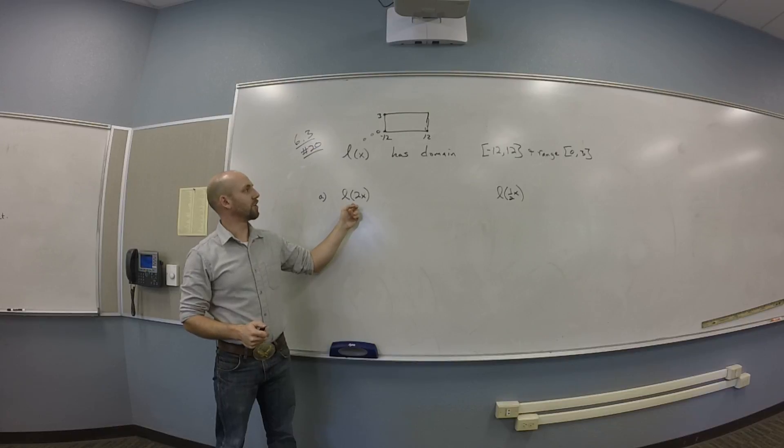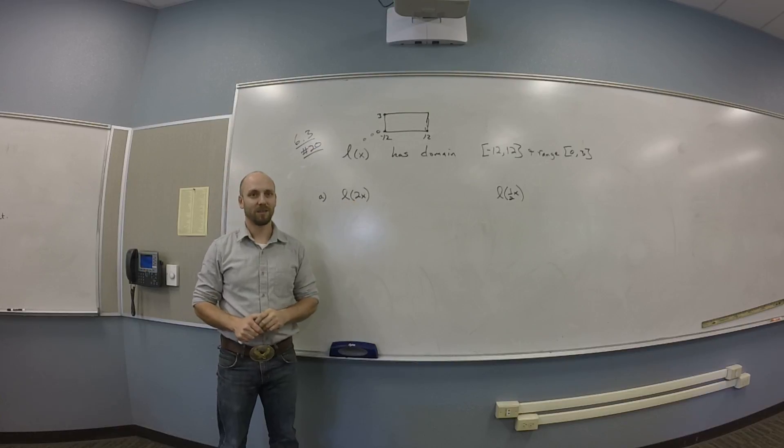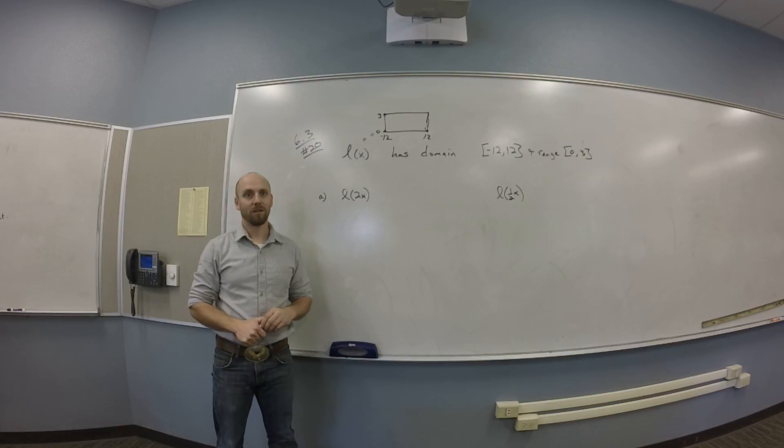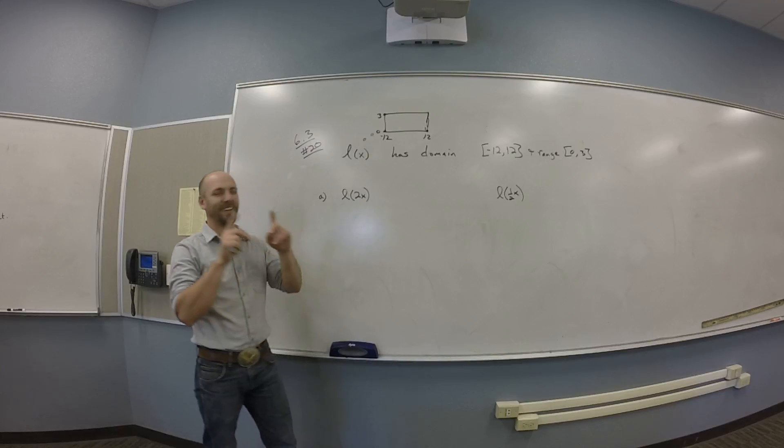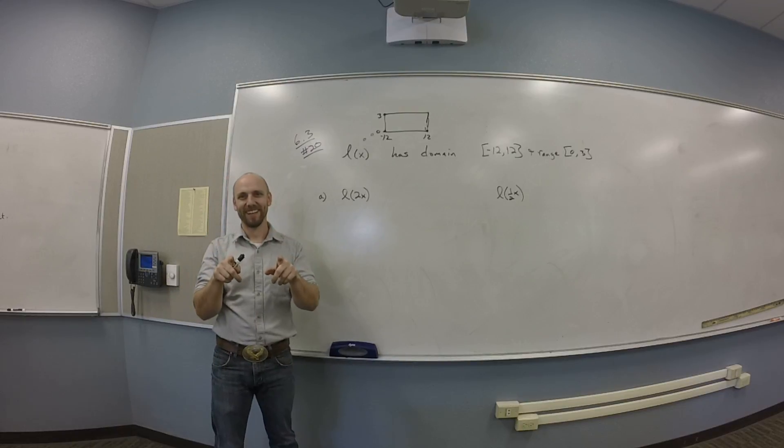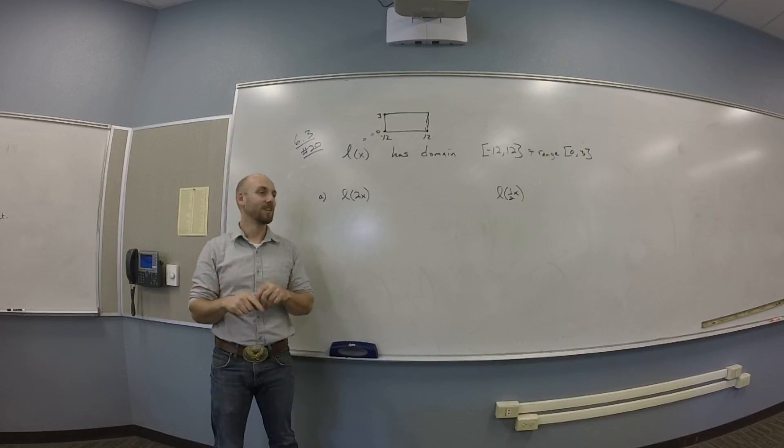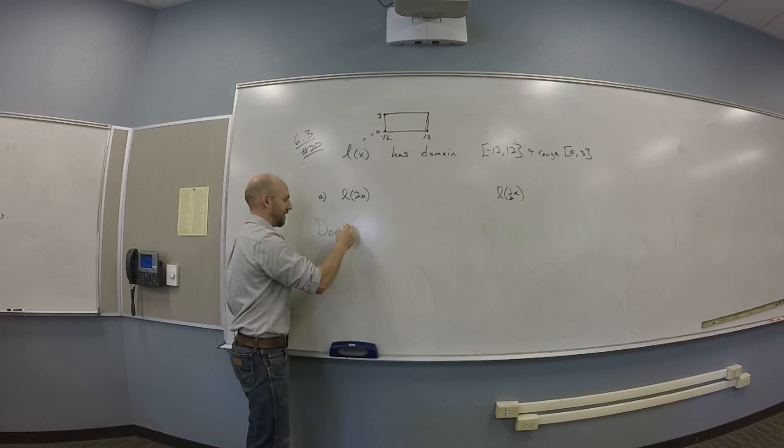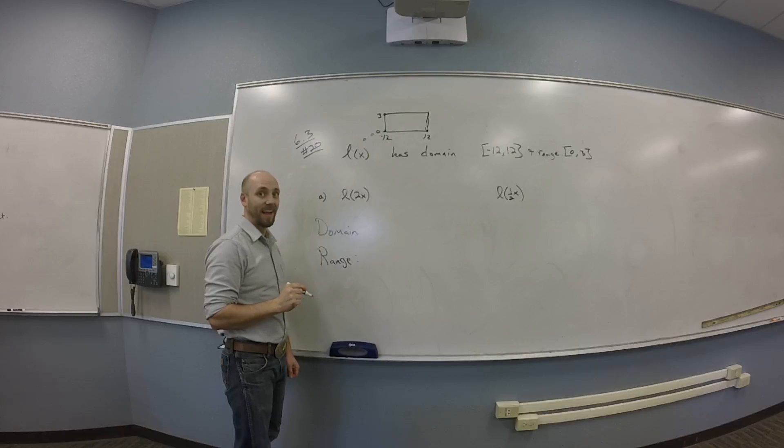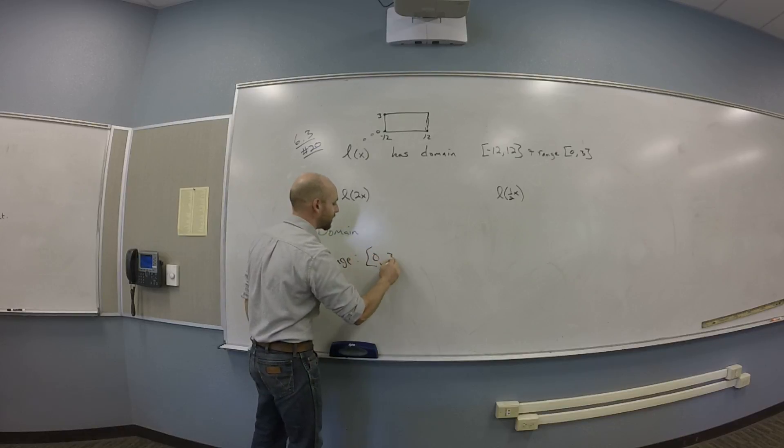I'm interested in what's the domain and range of L of 2X. So first, what am I changing here? The inputs. The inputs are changing. So what's the outputs going to do? What are the outputs doing? They're doing nothing. Nothing's happening to the outputs. You're not touching them. You're only changing the inputs. So the outputs are totally the same. Which one's the outputs? That's the range, which is 0 to 3. So the range stays the same. It's still 0 to 3 because you didn't mess with that.